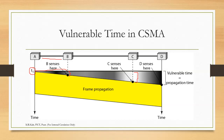There is a bigger lag for C because C is far from A. So even if data is sent by A at T1, C will come to know only at a later time. If during this lag time C senses the channel, C will think that nobody has sent the data and the channel is free. So C will send the data and there will be a collision. D is the farthest station from A, and the time it takes for the signal to travel from A to D is the propagation time. Therefore, the vulnerable time in CSMA is the propagation time.